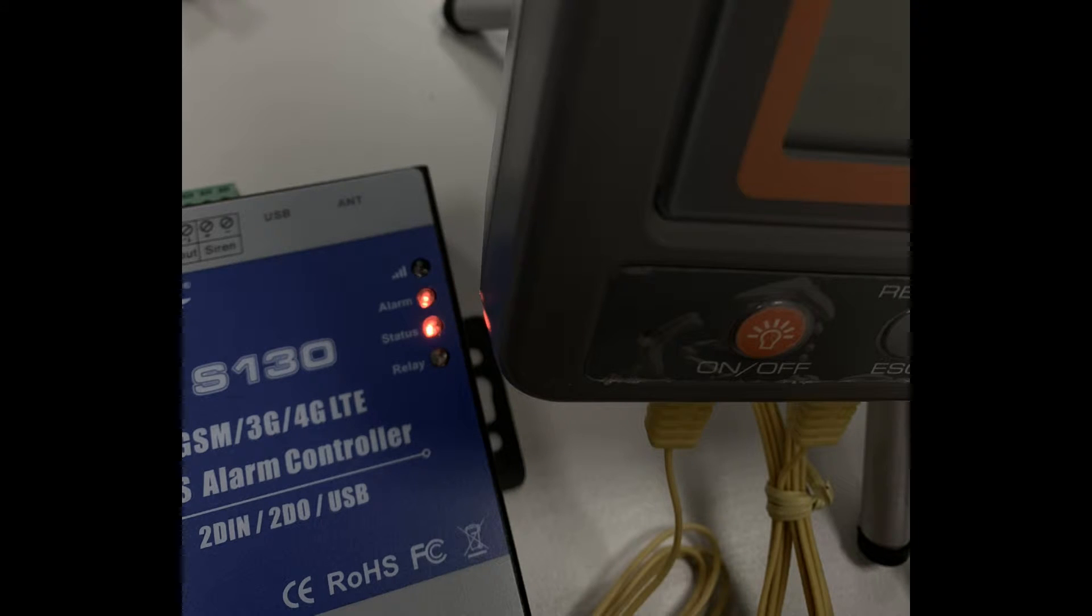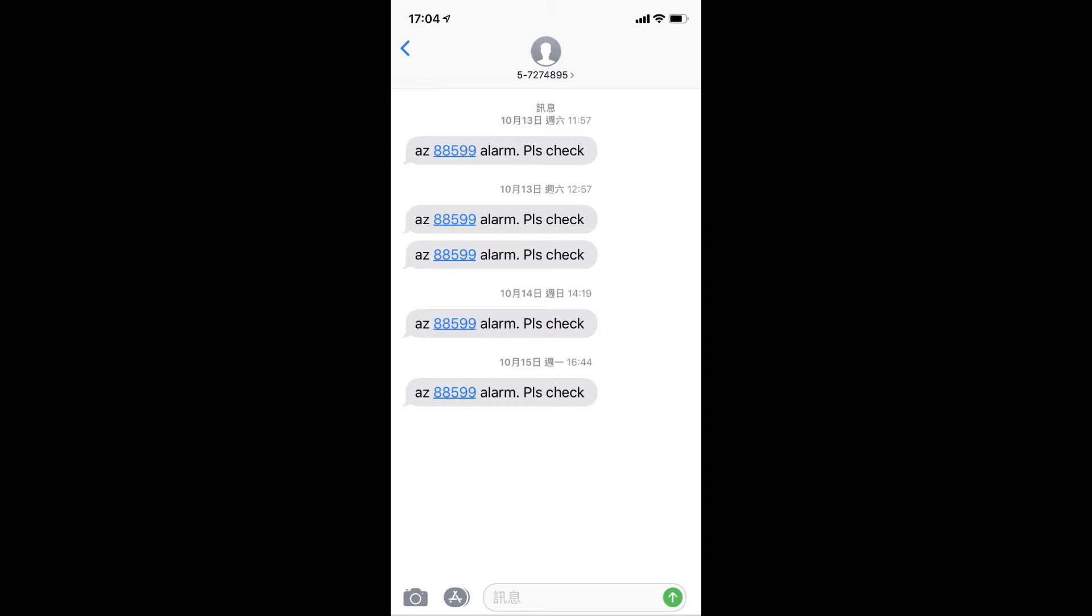Once the measured temperature is out of control range, you will immediately receive a message on your phone to remind you to take inspection action.